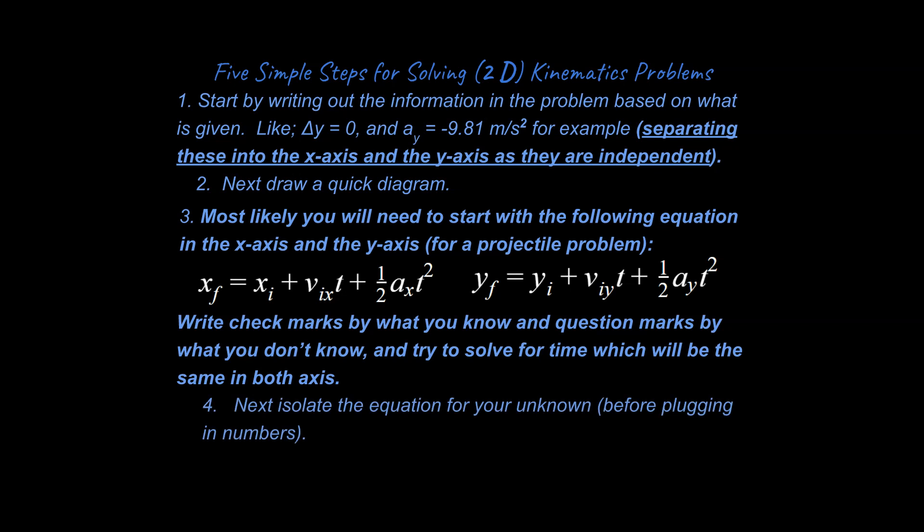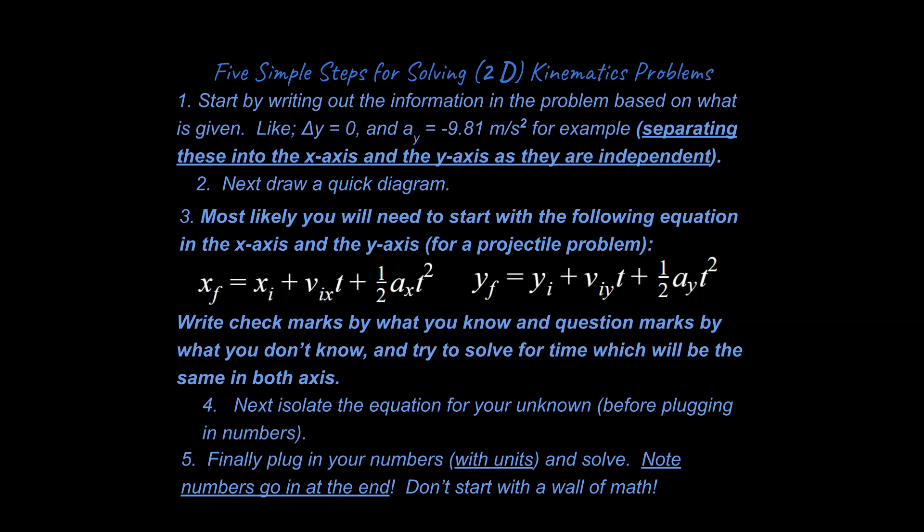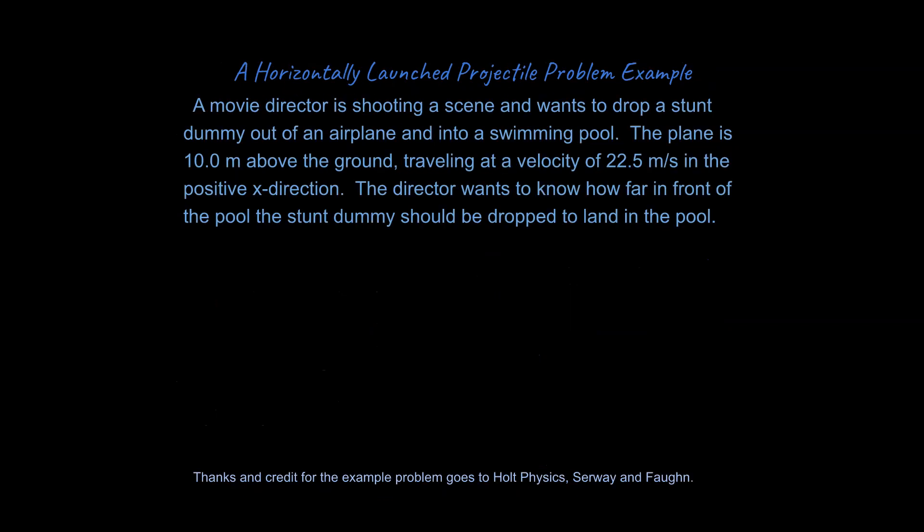So next up you're going to isolate your equation for your unknown before plugging in numbers. And towards the very end you're going to be plugging in numbers with units and solving. Note numbers go on at the end. Don't start with the wall of math. So let's go ahead and give a problem a try. So this is a horizontally launched projectile problem example. This is the easiest type of projectile problem to do.